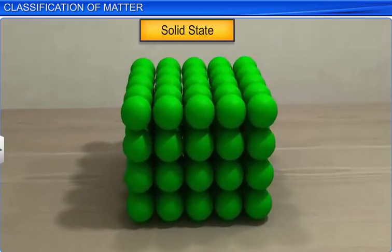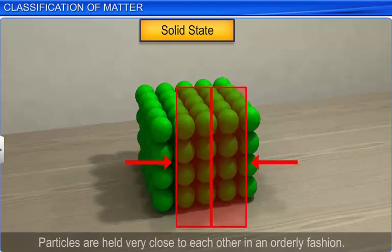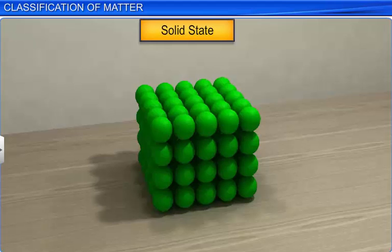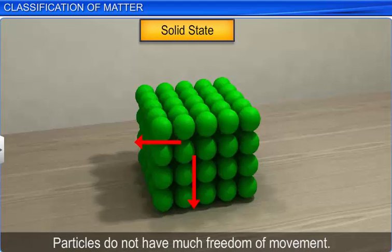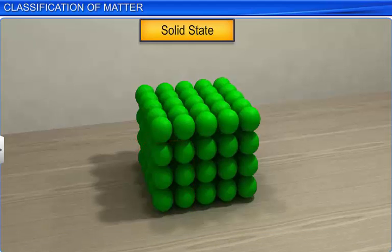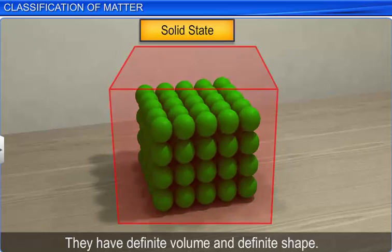In solid state, the particles are held very close to each other, in an orderly fashion. Hence, there is not much freedom of movement. They have definite volume and definite shape.